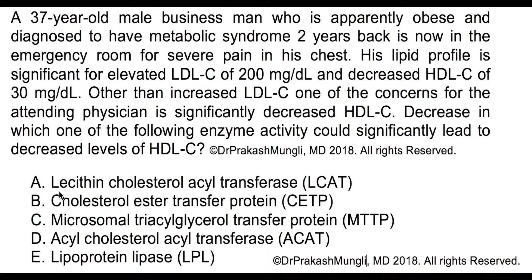The first enzyme is lecithin cholesterol acyltransferase — simply referred to as LCAT. The LCAT enzyme takes excess cholesterol from peripheral tissue, which comes out using the ABCA1 transporter (ATP-binding cassette transporter A1). This excess cholesterol is taken up by LCAT, which is located on the HDL molecule — specifically, on the nascent discoidal HDL molecule. LCAT converts that excess cholesterol into cholesterol ester and stores it in the interior core of nascent discoidal HDL.